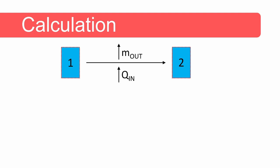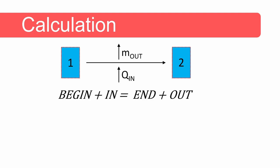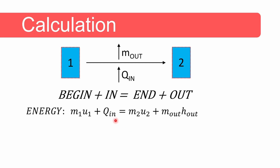The state changes from one to two. Energy conservation requires that the energy at the beginning plus the energy flowing into the system equals the energy at the end plus the energy flowing out. The energy at the beginning is the mass of water multiplied by the internal energy of the liquid water. The only energy entering the system is the heat Q.